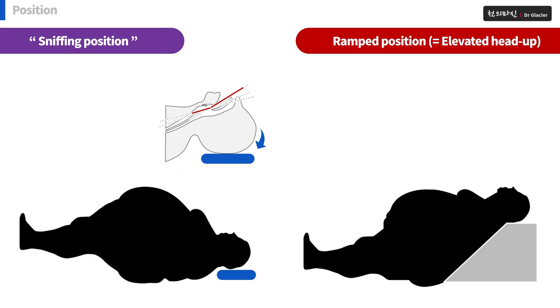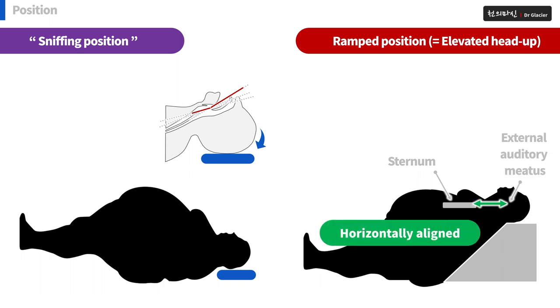It's ramped position. This position makes airway management easier. Align the sternum and external auditory meatus to the same height.